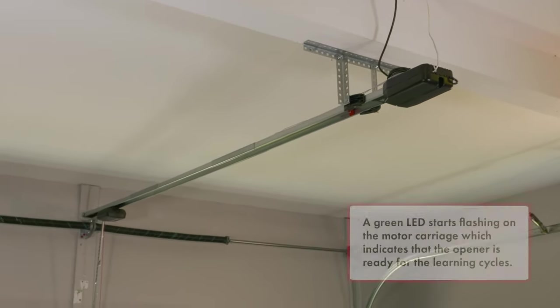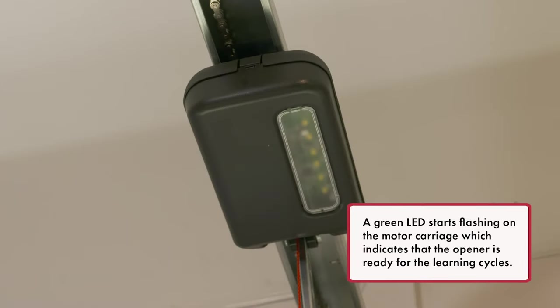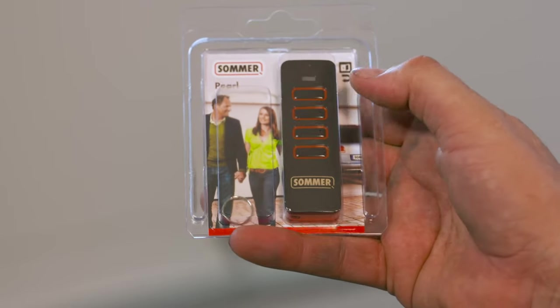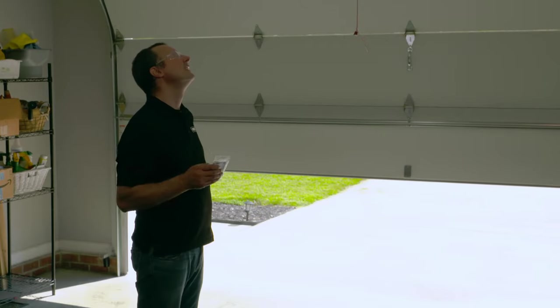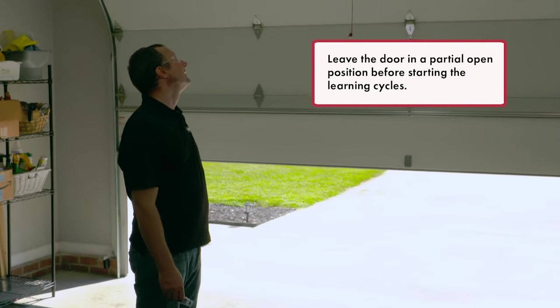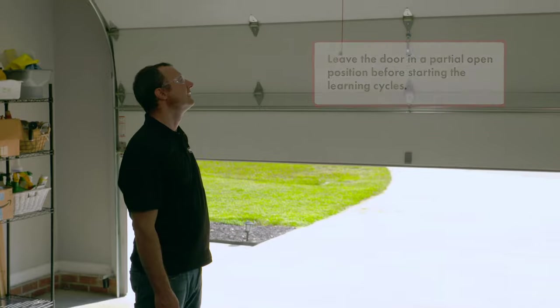A green LED starts flashing on the motor carriage, which indicates that the opener is ready for the learning cycles. Leave the door in a partial open position before starting the learning cycles.